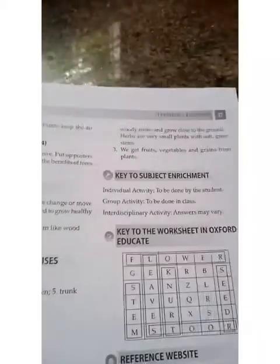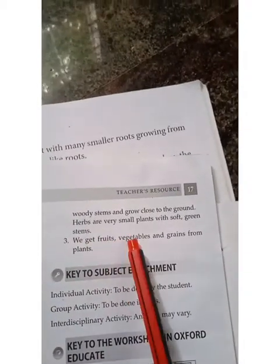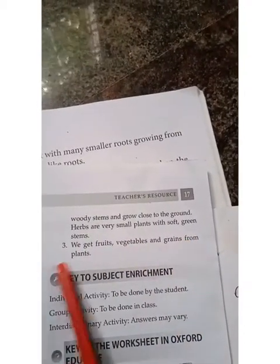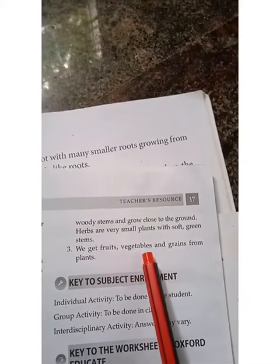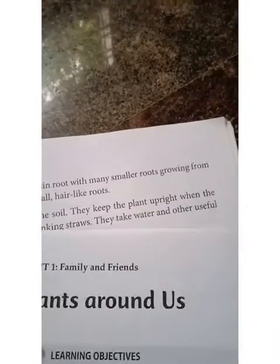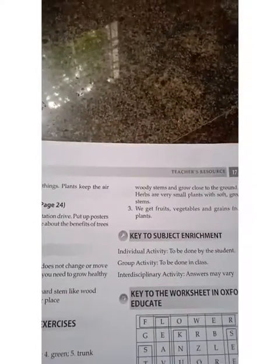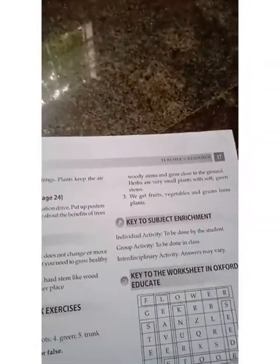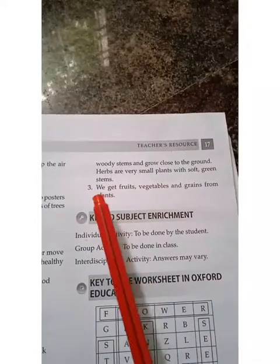Shrubs are smaller than trees — they have woody stems and grow close to the ground. But herbs are very small plants with soft green stems. Question three: name any three things we get from plants. We get fruits, vegetables and grains from plants.